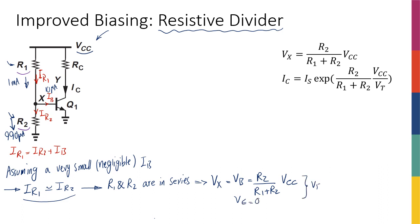And knowing that Ic is equal to Is exponential of Vbe over Vt, then I can just basically replace Vbe with this expression, and I get this nice expression here.